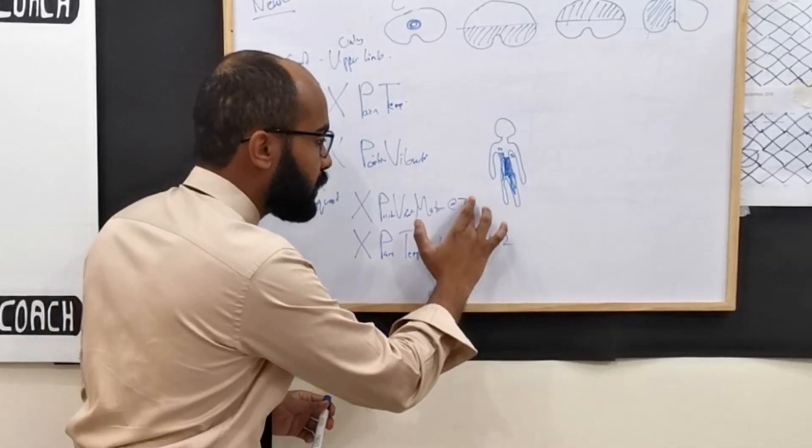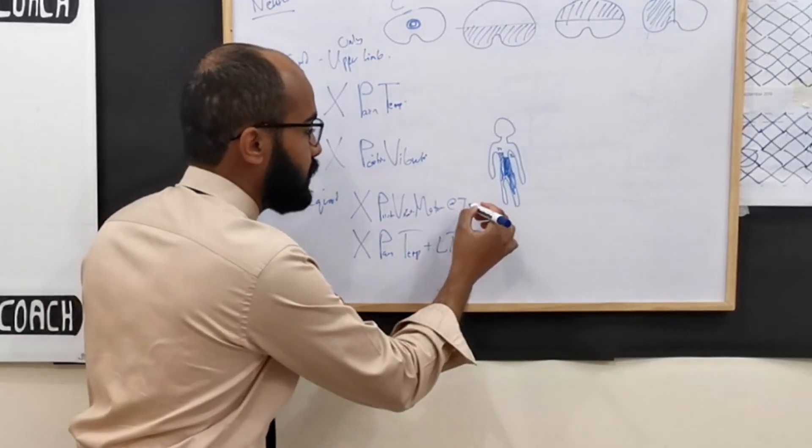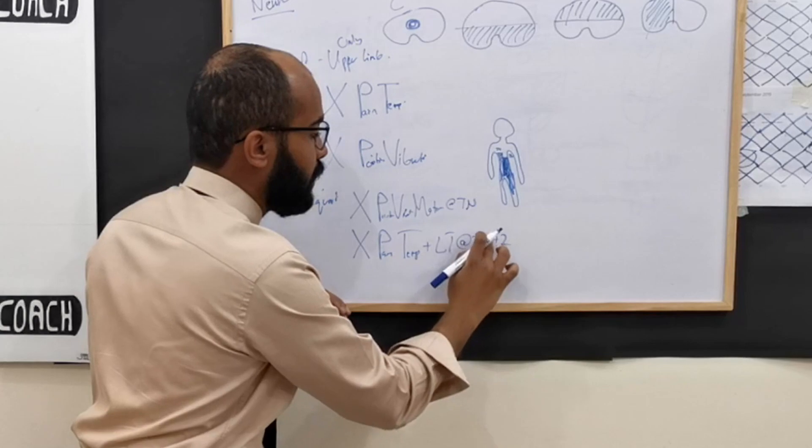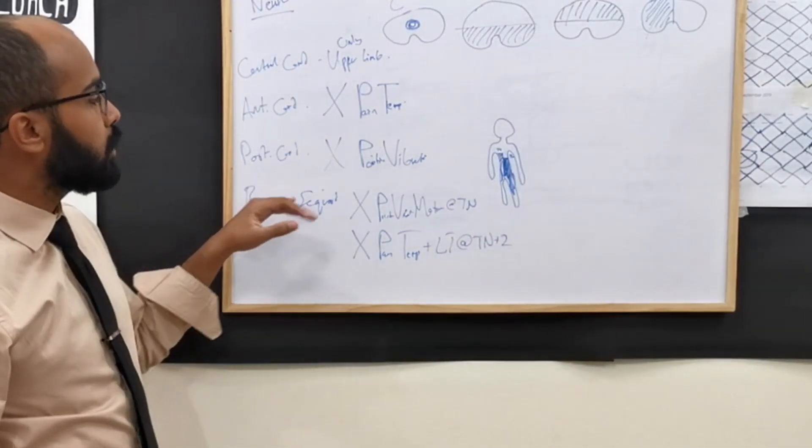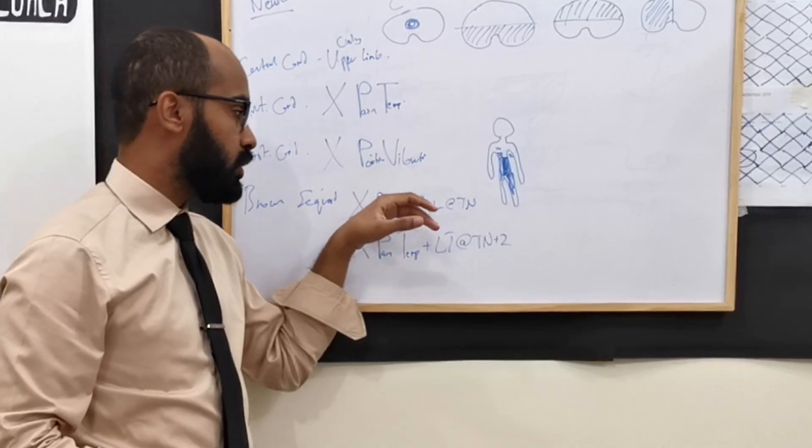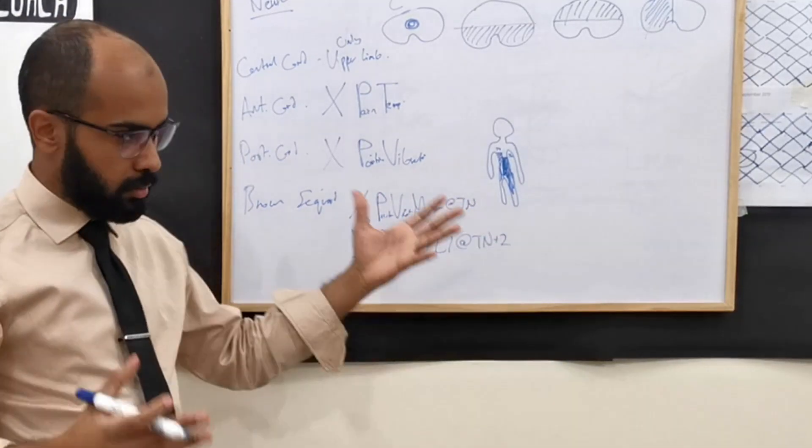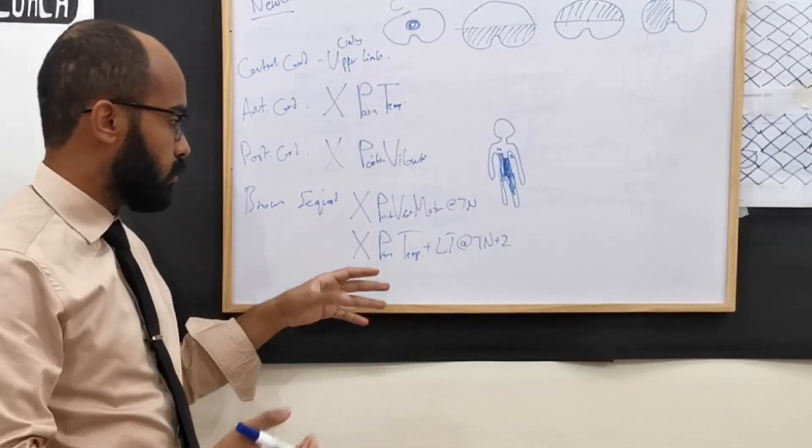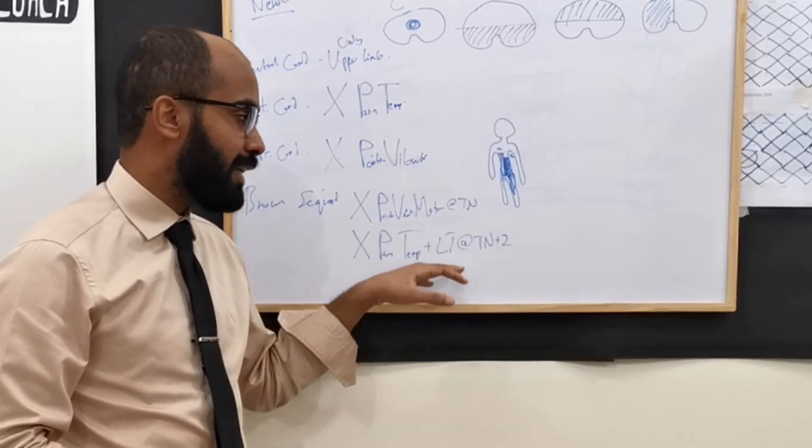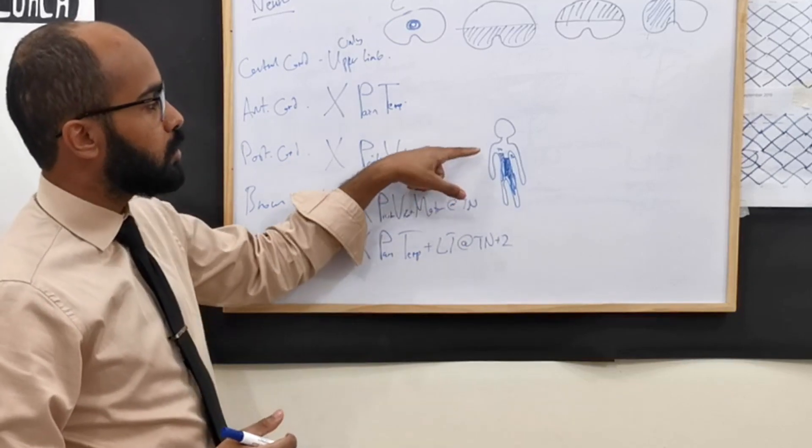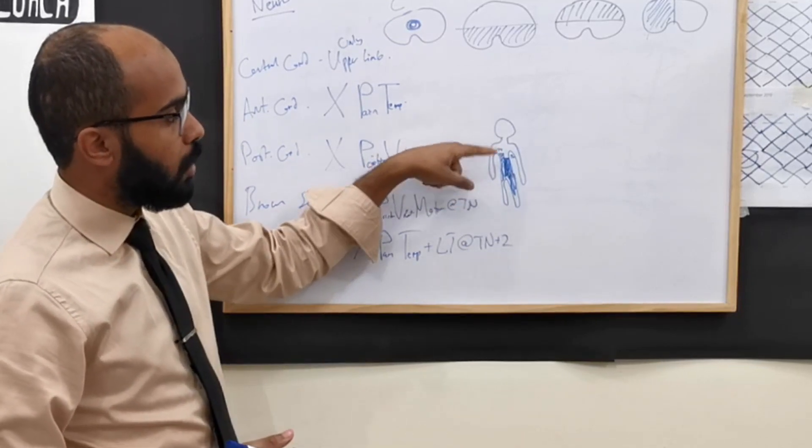I'm just going to correct this. I'm going to put, let's say, Tn. And then here, Tn plus 2. Brown-Séquard has position, vibration, and motor at Tn or whatever. And then there is also loss of pain, temperature, and light touch two levels below it.